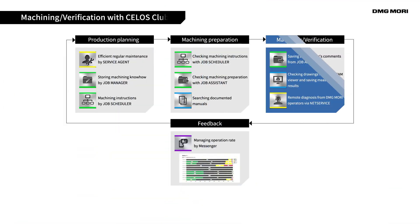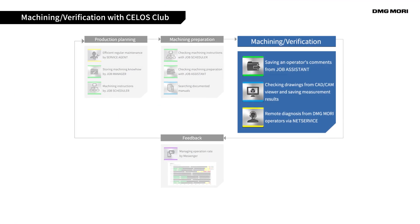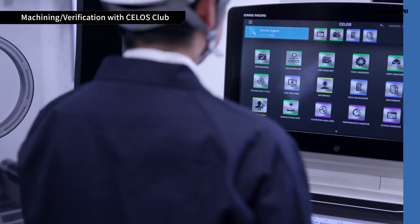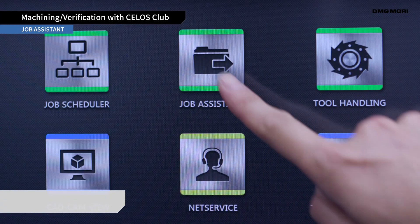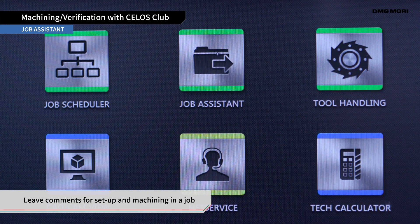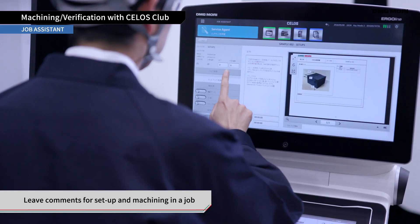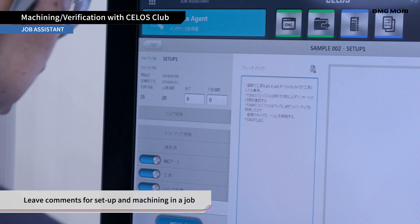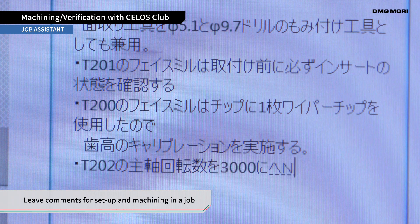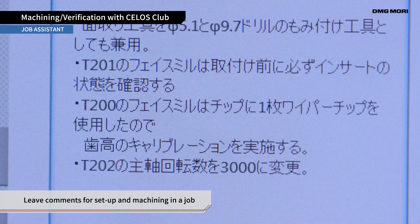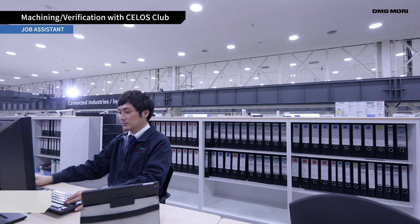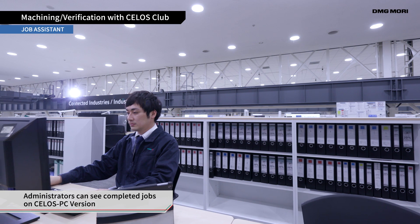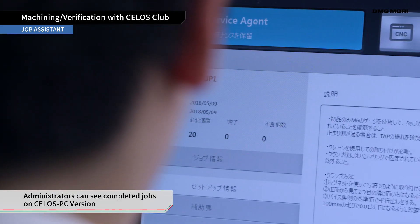The third phase is Machining Verification. Under Job Assistant, you can leave comments for setup and machining in a job. Administrators can see completed jobs on Celos PC version.